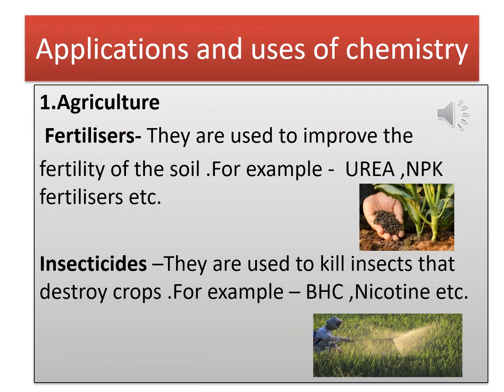Our first topic is applications and uses of chemistry. There are a number of major fields where chemistry plays an important role. The first field where chemistry is important is agriculture. Chemistry has helped agriculture in various ways by the use of chemical compounds. These chemical compounds are used to make fertilizers, insecticides, fungicides, and herbicides. Now one by one we will discuss the role of these chemical compounds.